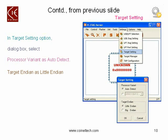The next setting is the Target Setting. When you click on Target Setting, the dialog box appears with these options. You need to select your processor variant as Auto Detect and target engine as Little Endian.